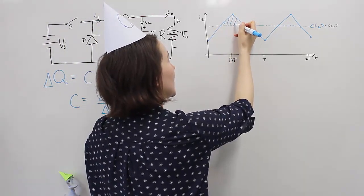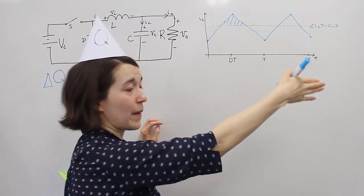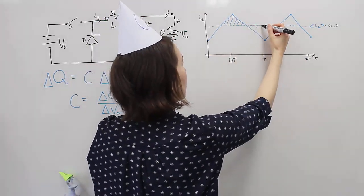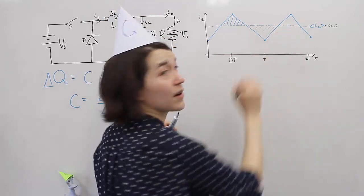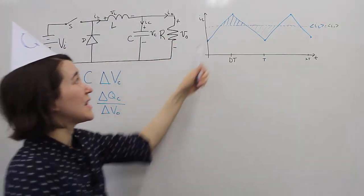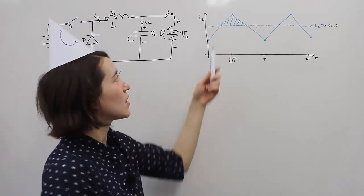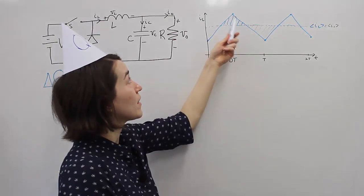So here's charge going into the capacitor, and then here we have charge coming out of the capacitor. We know that at steady state, these charges need to be equal.